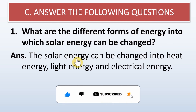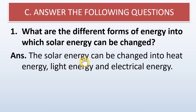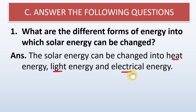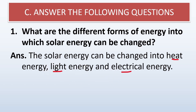What are the different forms of energy into which solar energy can be changed? Solar energy can be changed into heat energy, light energy, and electrical energy. These are the different forms of energy that solar energy can be converted into.